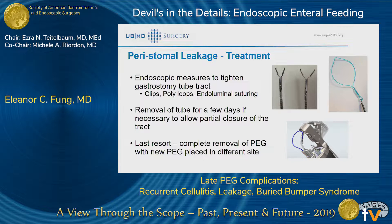If you have an excessive amount of leakage, there are endoscopic measures available. You can try to tighten the gastrostomy tube tract using clips, poly loops, or endoluminal suturing. Sometimes you can give a PEG holiday — remove the tube for a few days — which helps close the tract a little bit, then replace it with the same size tube for a partial closure and tighter seal. The last resort is complete removal of the PEG and placing a new PEG in a different site. That's really a last resort because the same issues are going to arise again if we don't deal with the preventative measures first.